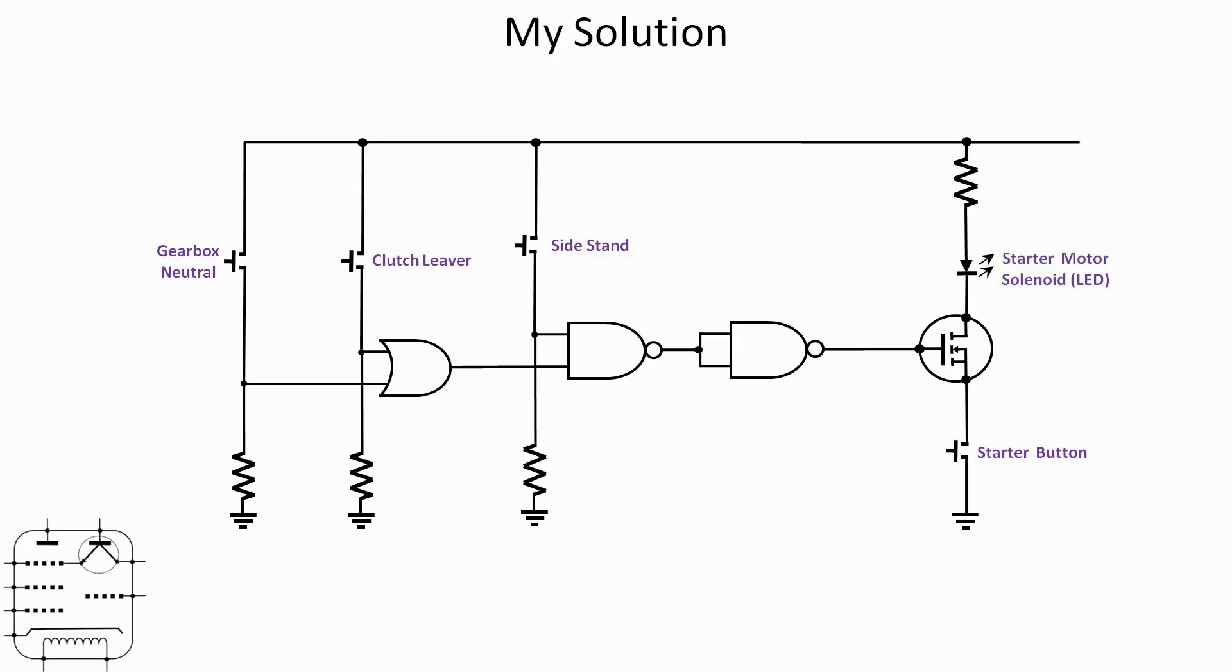So how does my solution work? First of all I'll start with an OR gate, and the inputs to that OR gate are the gearbox neutral indication and the clutch lever. If the gearbox is not in neutral and the clutch lever is not pulled in, both inputs are low so the output will be low. However, if the gearbox is in neutral, whether the clutch lever is pulled in or not, the output will be high. That then feeds into the next gate which is a NAND gate.